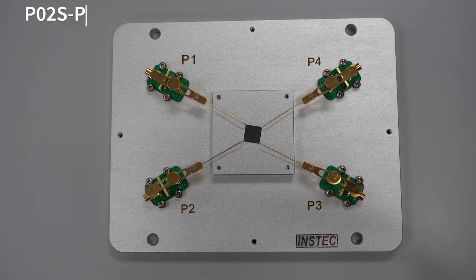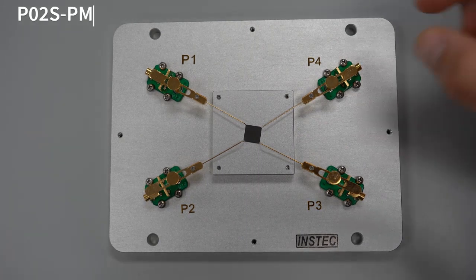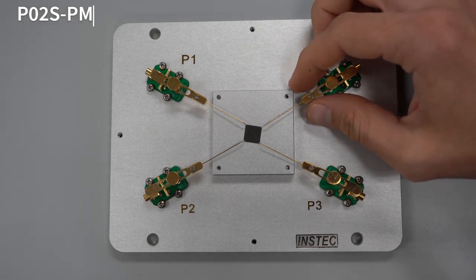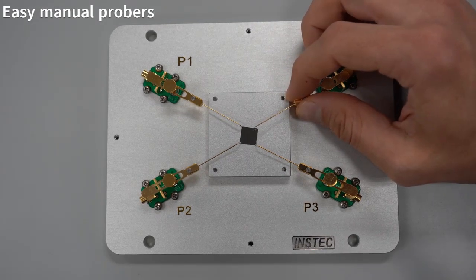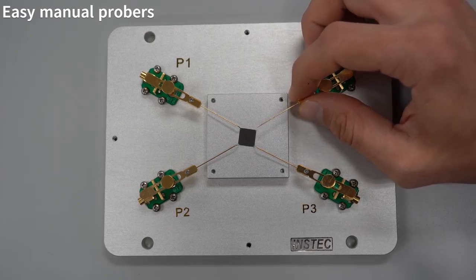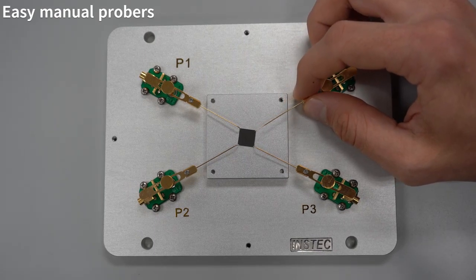It's simple to use the P02S-PM with their spring-loaded probers with slotted prober design. Simply lift up the prober, and you can drag it forward and backwards with the slotted design allowing you to move in the lateral directions.